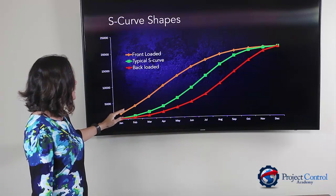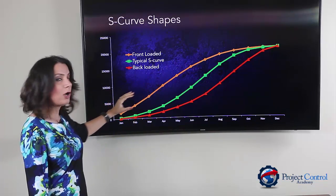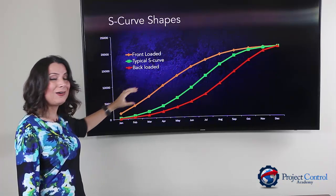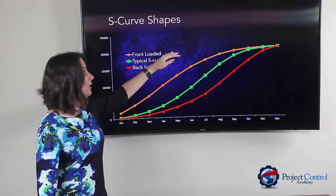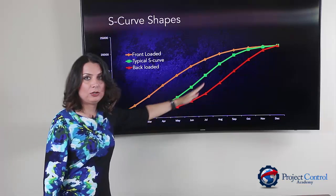As you can see, that's the front-loaded S-curve — kind of a very sharp curve, what I like to call a half-dome curve. And this is the back-loaded curve.